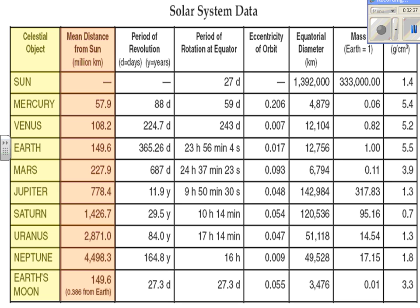The next column gives the mean distance — or average distance — from the Sun in millions of kilometers. As you go down the list, the values increase, meaning you are going further away from the Sun.